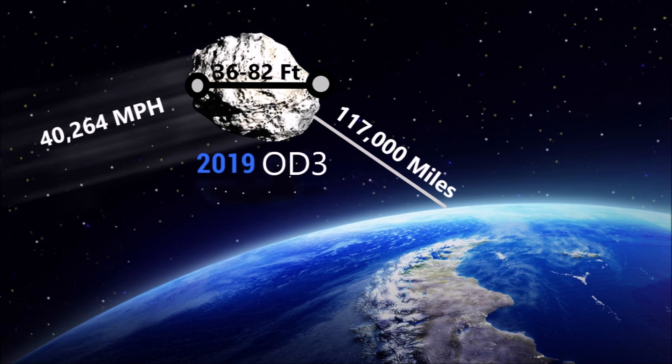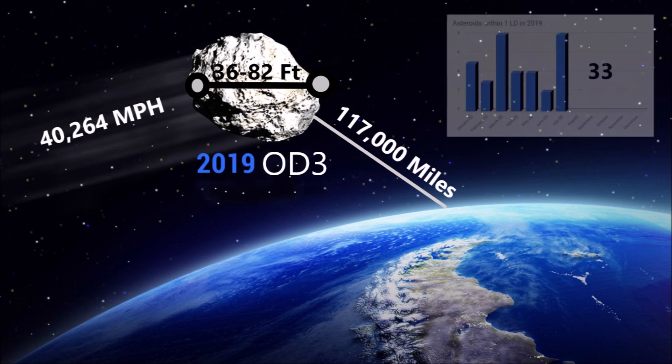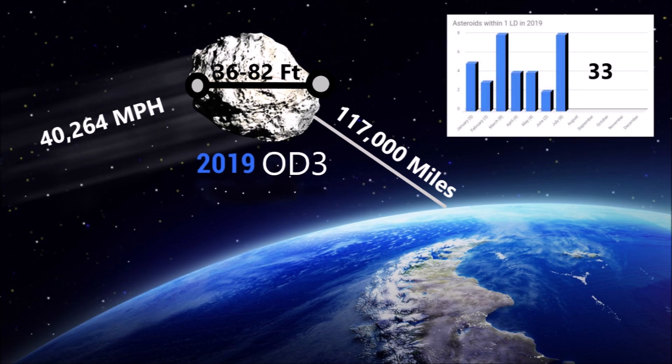This was the 33rd known asteroid to fly by earth within one lunar distance since the start of the year, and it was the 7th for the month of July.